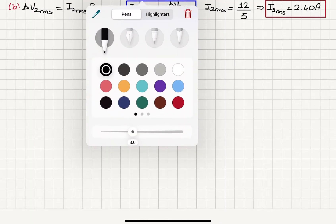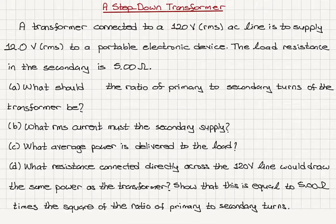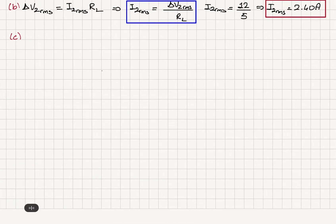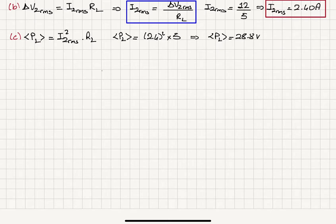Let's move on to Part C. Part C asks: what average power is delivered to the load? The average power delivered to the load equals the RMS current I2 squared times the load resistance. So the average power is 2.4 squared times 5, giving an average power delivered to the load of 28.8 watts.